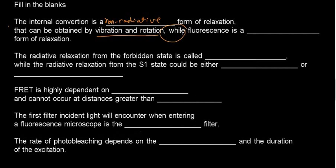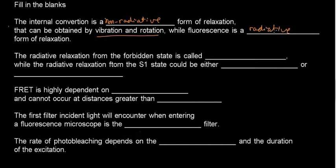While fluorescence — and the word 'while' signals a contrast — is a radiative form. By radiative I mean: am I getting photons? Non-radiative means I'm not getting photons; radiative means I am getting photons. So fluorescence is a radiative form of relaxation.